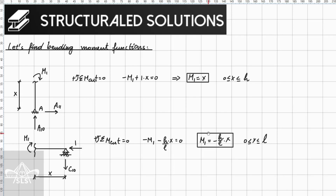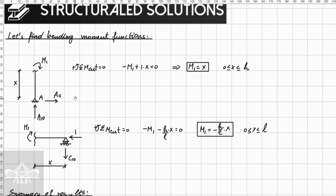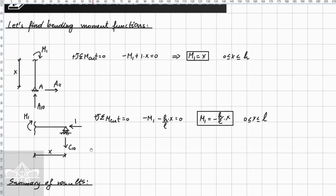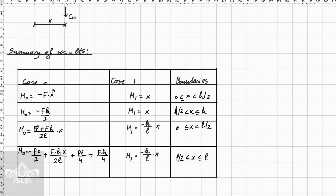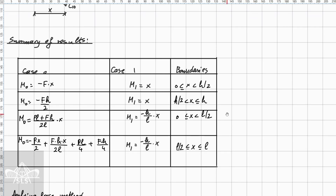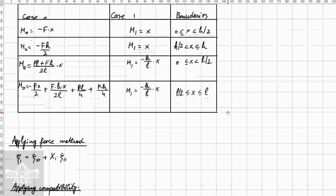The next step is to determine the bending moment functions for case one by taking cuts at discontinuities. This time it is simpler — there are only two bending moment functions. It is helpful to make a summary table of all bending moments from each case with their respective boundaries, which helps avoid using the wrong moment functions when solving for the unknowns.